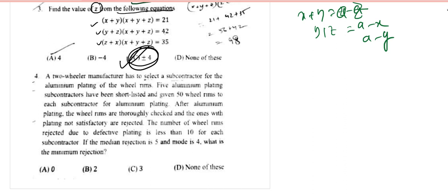Hello dear students, today's video is on ISI MSQ 2022 solution. Today I have come with the second video. Question four: A two-wheeler manufacturer has to select a subcontractor for the aluminum plating of the wheels.